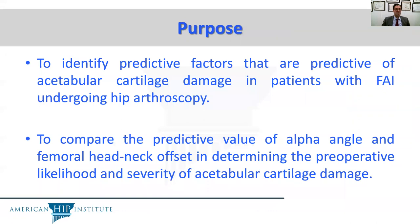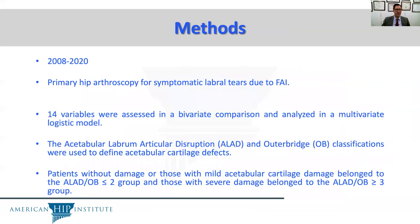The purpose of this study was to identify predictive factors for acetabular cartilage damage in patients with FAI, specifically looking at the predictive value of alpha angle versus offset in determining the preoperative likelihood and severity of acetabular cartilage damage. We looked at patients who had surgery between 2008 and 2020, including primary hip arthroscopies for symptomatic labral tears due to FAI. Fourteen variables were assessed in bivariate comparison and analyzed in a multivariate logistic regression model.